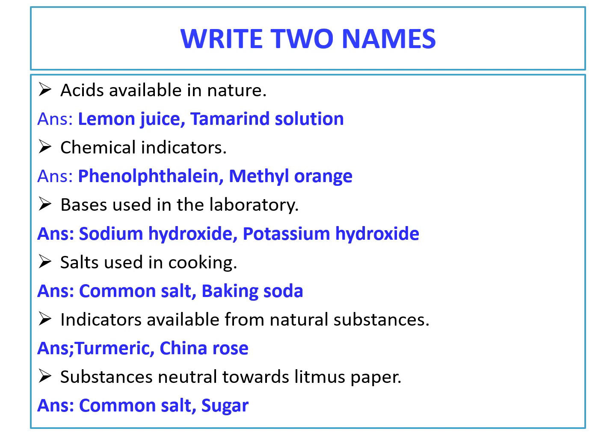Next, indicators available from natural substances. Natural indicators come from turmeric — we make turmeric paper from turmeric — and china rose petals, from which we make china rose petal indicator. Next, substances neutral towards litmus paper — substances that show no color change in litmus — are common salt and sugar.